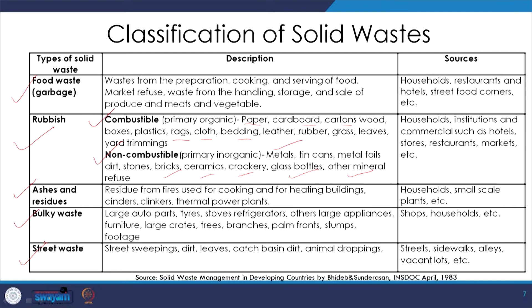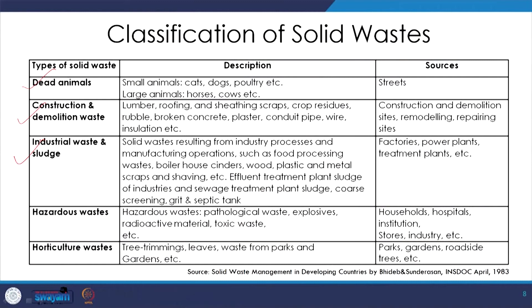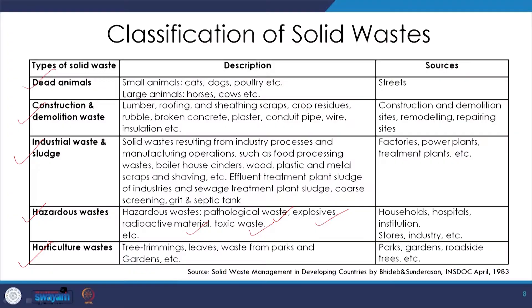Some of these wastes may not figure as part of solid waste management schemes in sustainable architecture, but it is imperative to know about all types. We also have industrial waste and sludge, which varies depending on the type of industry. Then there are hazardous wastes including pathological or medical waste, explosives, radioactive material, and toxic waste — present in limited quantities in buildings depending on usage. Finally, horticulture waste is the garden waste.